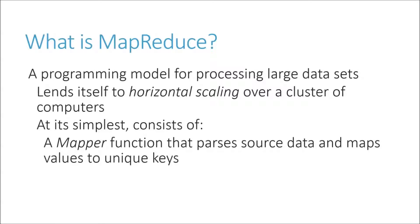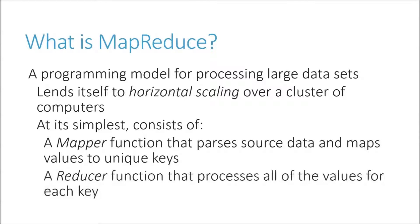At its simplest, MapReduce just consists of a mapper and a reducer. A mapper is a function that parses source data and maps values to unique keys — it extracts the information you care about from your data set and organizes it for you. Various parts of your data may go to different mappers, which can process them all in parallel on different computers. Then a reducer function processes all of the values for a given key.